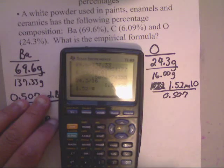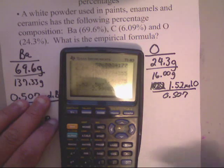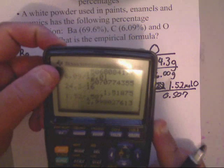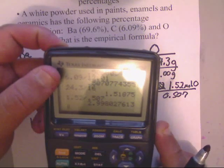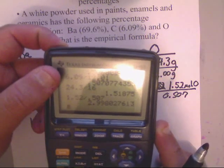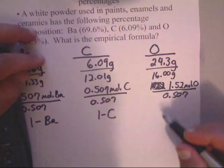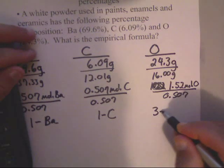This one, I'm not too sure about. Let's see what it gives us. We've got 1.52 divided by 0.507. Look at that. See that? That is 2.998. What number is that, really? That's the number three. So, that's going to be three oxygens.